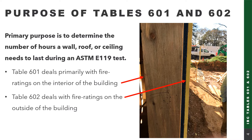The primary purpose of Table 601 and 602 is to determine the number of hours a wall, roof, or ceiling will need to last during an ASTM E119 test. Table 601 deals primarily with fire ratings on the interior of the building, whereas Table 602 deals with fire ratings on the outside of the building.